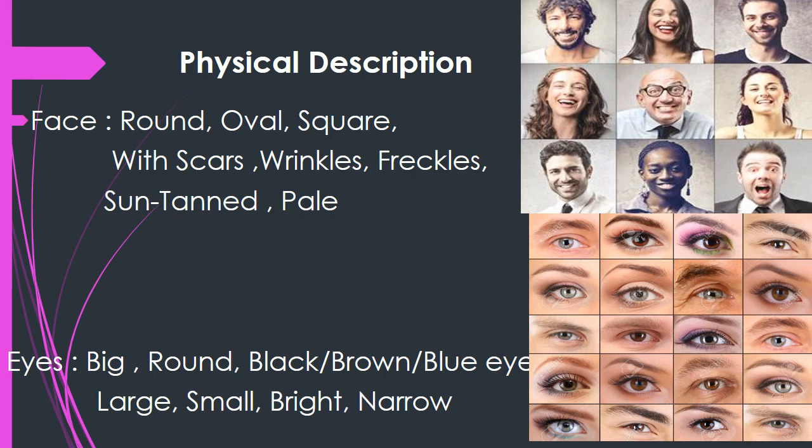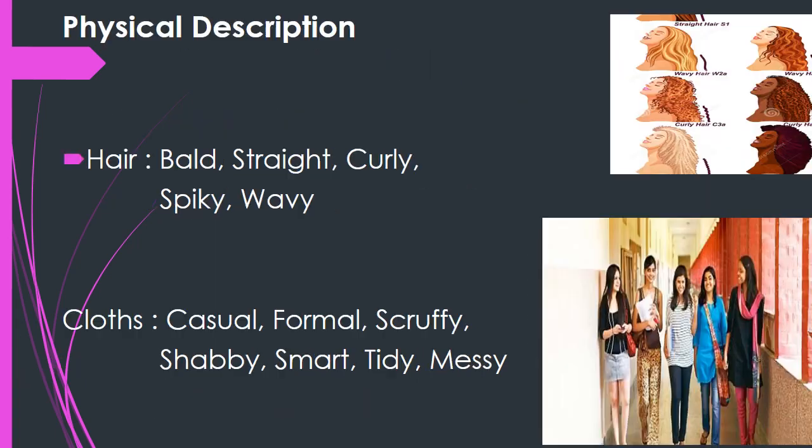The next feature is eyes. You will see different types of eyes here — a person's identity includes their eyes. Eyes can be big, round, with colors such as black, brown, or blue. They can be large, small, bright, or narrow.